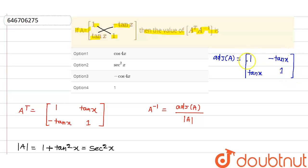Basically for finding the adjoint of a 2 by 2 matrix we just change this diagonal and then multiply this diagonal with these two. So just change this diagonal and then multiply with negative sign. So it is what? 1 minus tan x, tan x, 1.